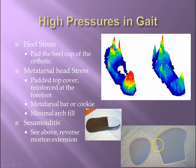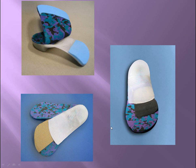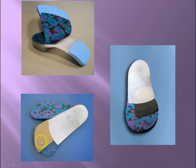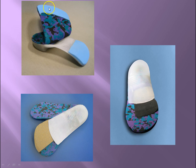The metatarsal bar, the metatarsal cookie, the padded heel, the forefoot valgus wedge using EVA versus a reverse Morton extension using corex — and we've got poron up here padding the whole ball of the foot.